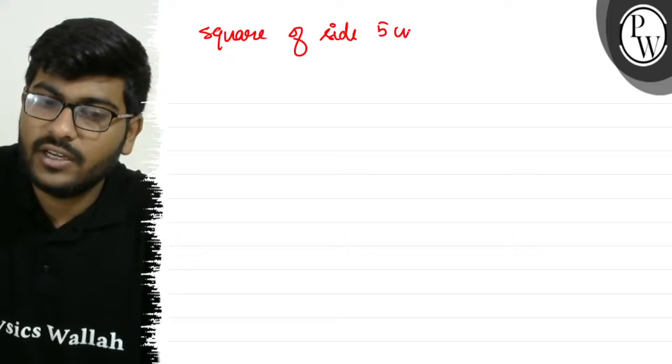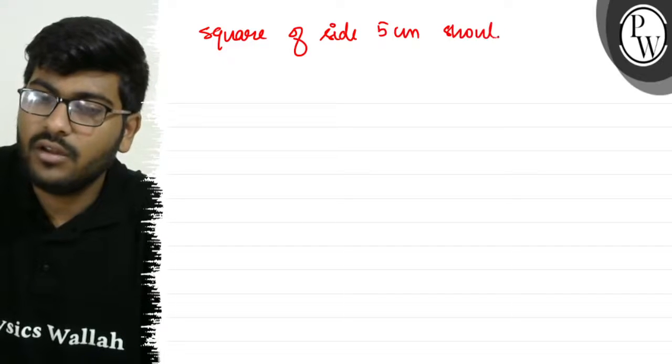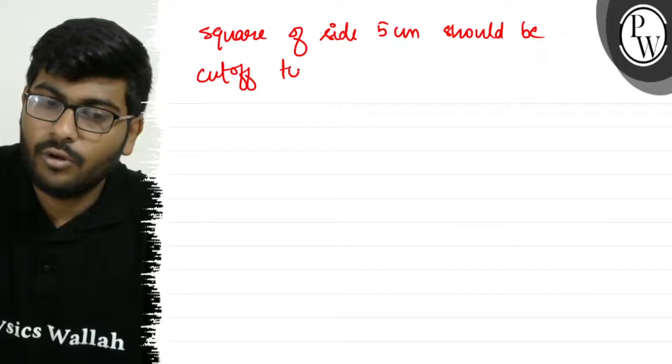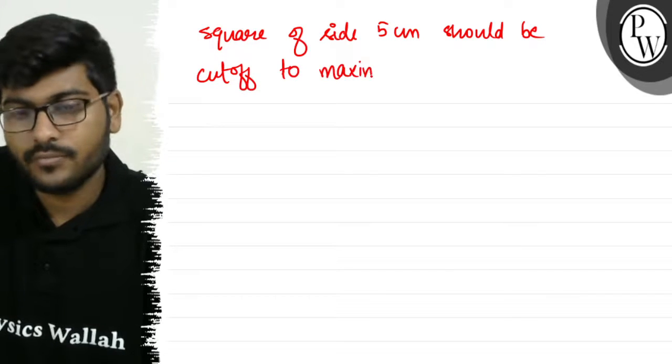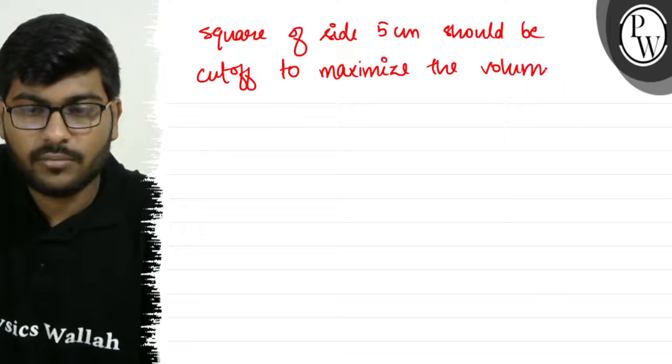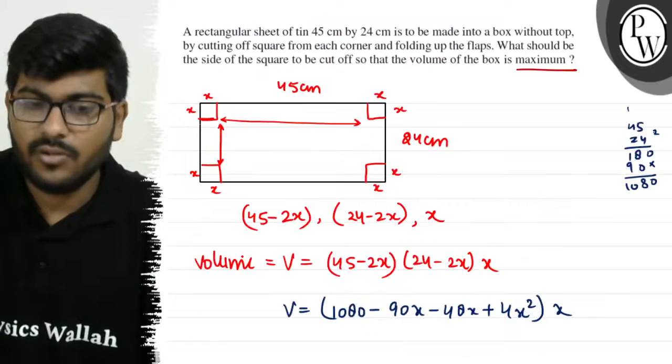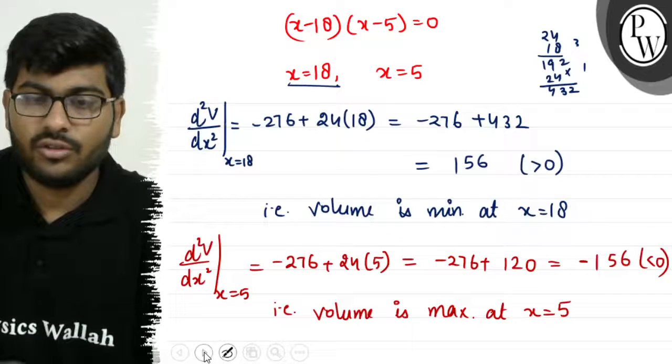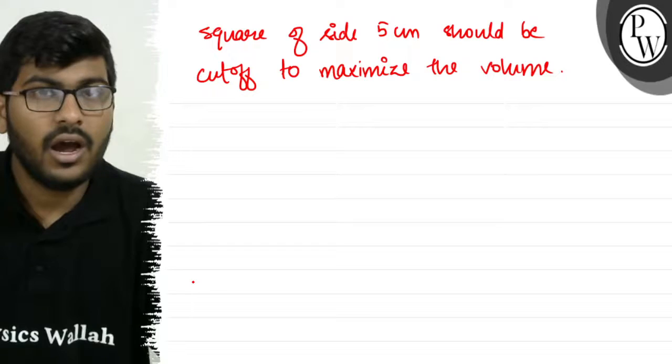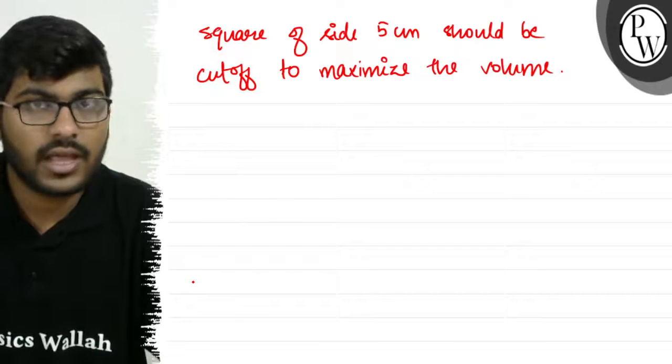A square with side 5 centimeters should be cut off to maximize the volume. This is the explanation to this question. I hope you understood the explanation. Thank you.